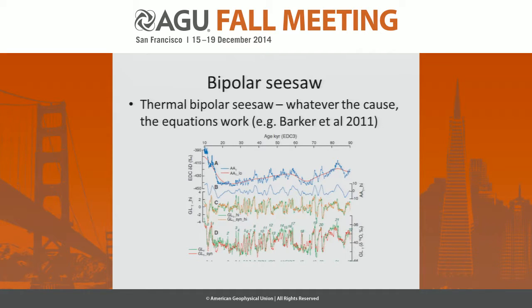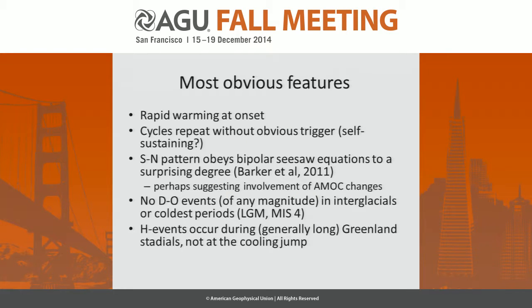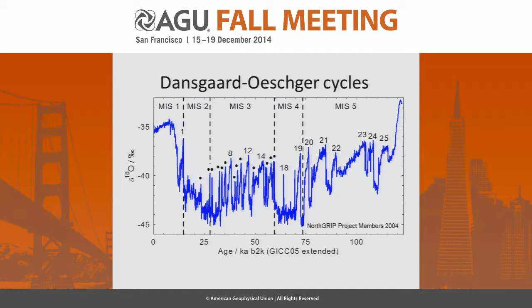That comes particularly from Steve Barker's paper showing how well you can reproduce Greenland climate just by differentiating Antarctic climate. There are no DO events of any magnitude in either interglacials or the coldest periods, and Heinrich events occur during the stadials, not during the cooling jump.